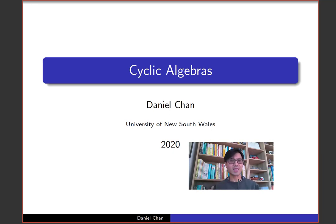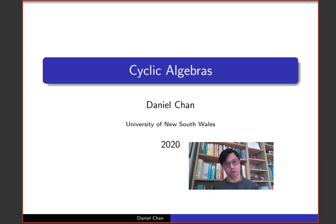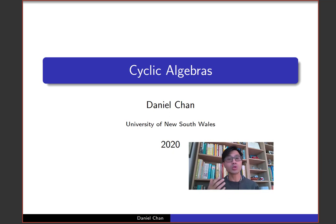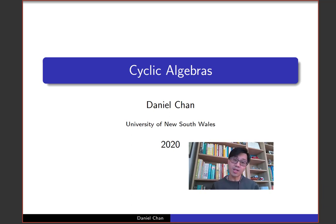Hi, I'm Daniel Chan from UNSW Sydney. Welcome to another adventure in pure mathematics. In this playlist we've looked at the notion of a quaternion algebra, which is a non-commutative generalization of a quadratic field extension. In this video I want to talk about a very interesting construction of central simple algebras: that of the cyclic algebra, which one can think of as a non-commutative generalization of cyclic field extensions.